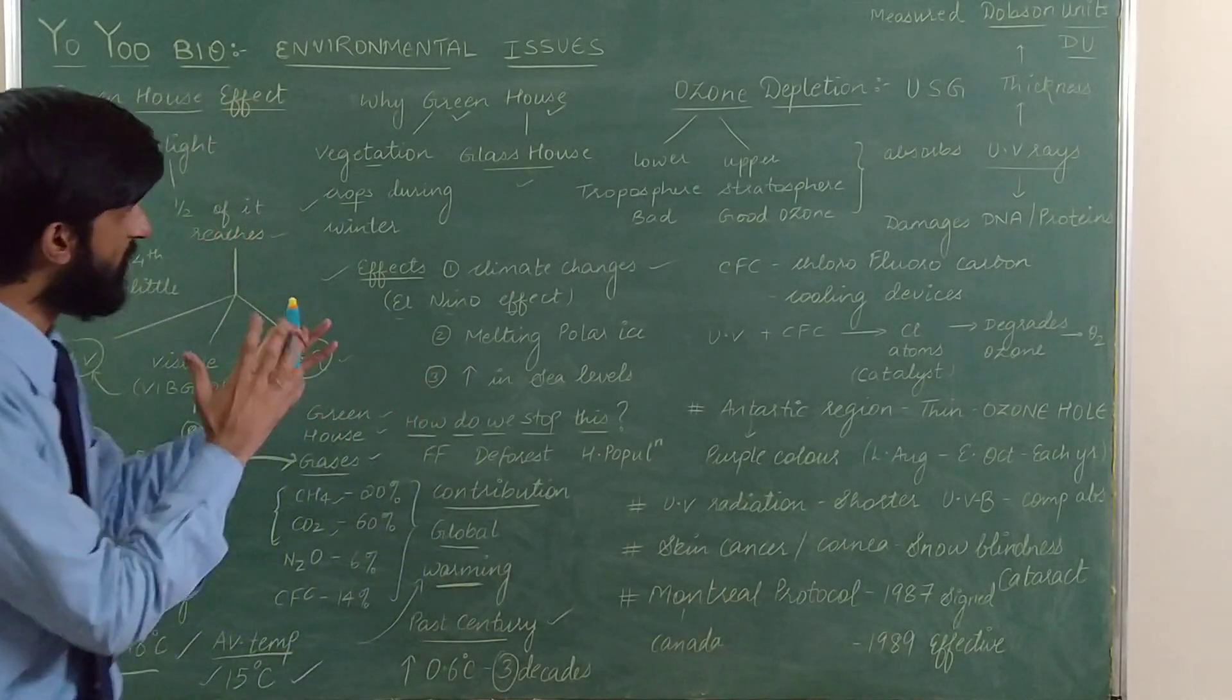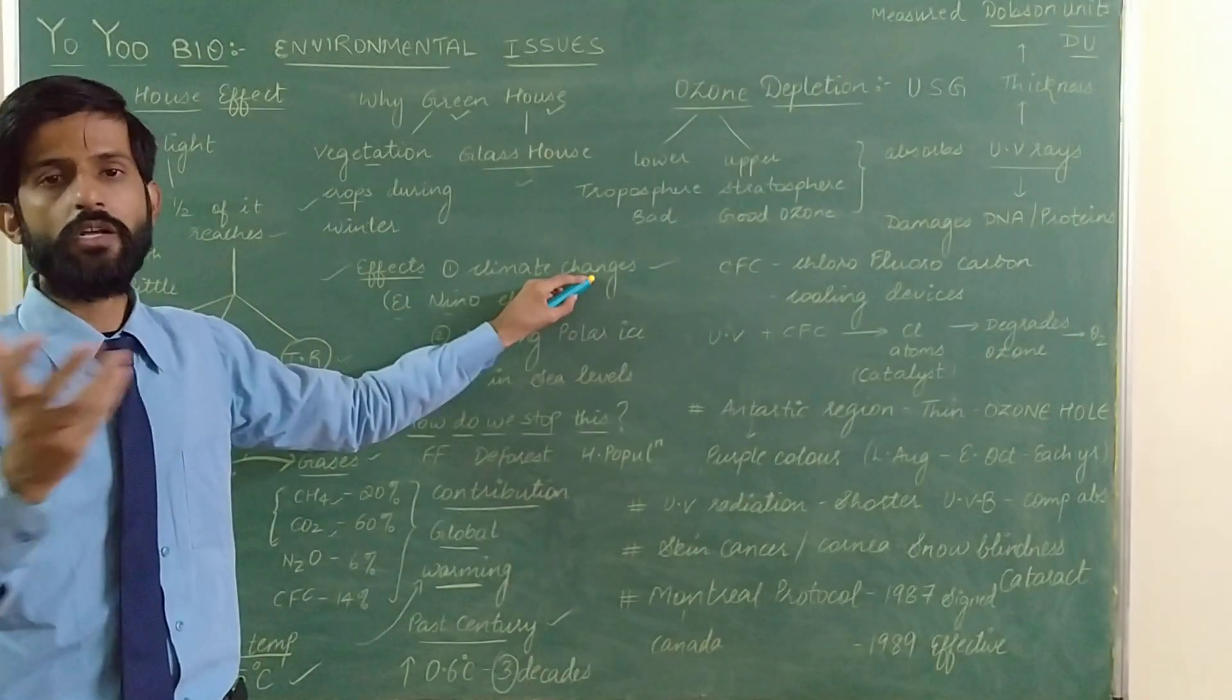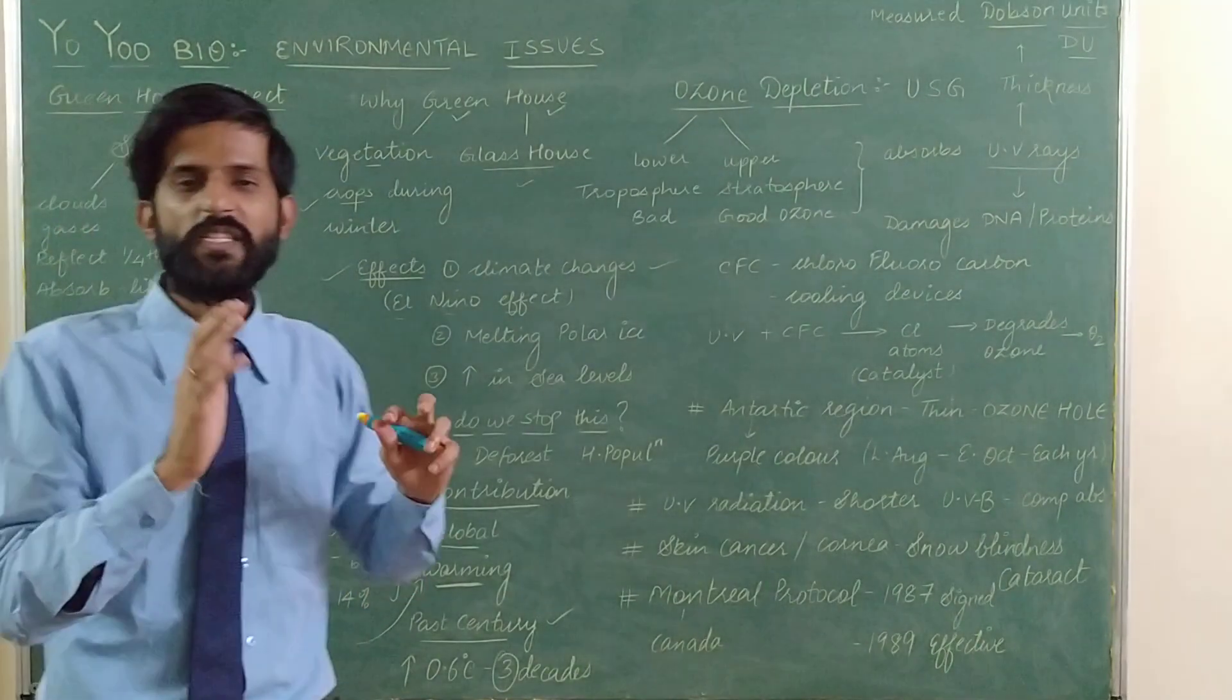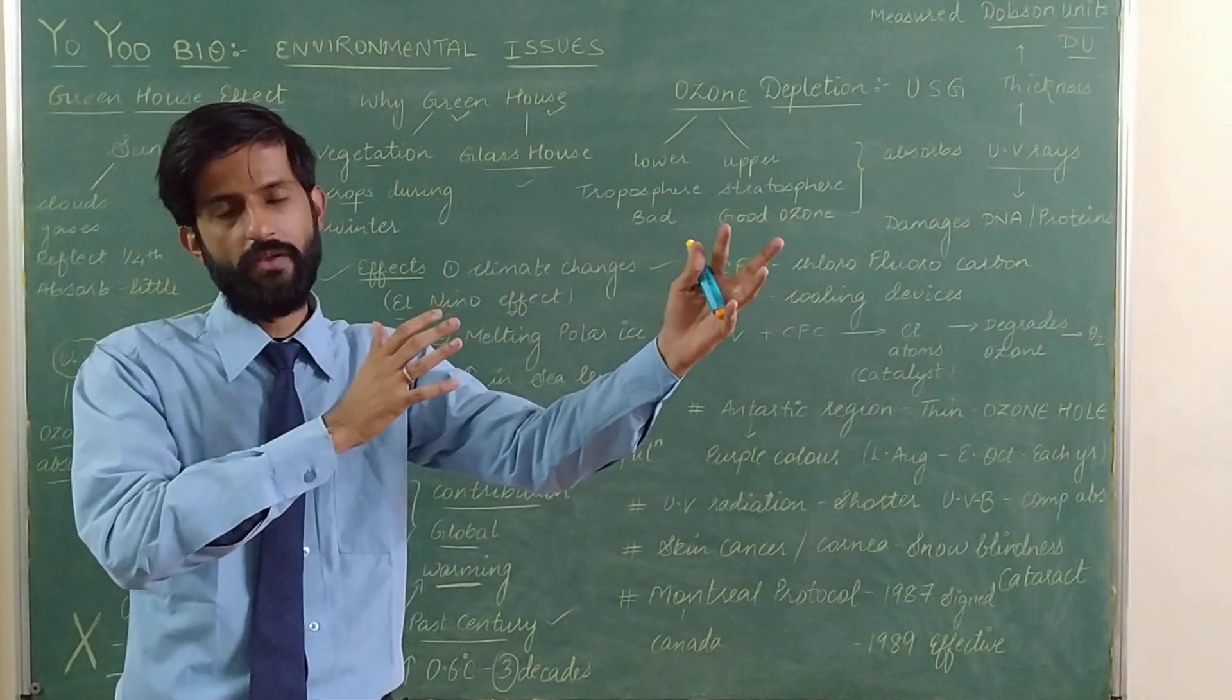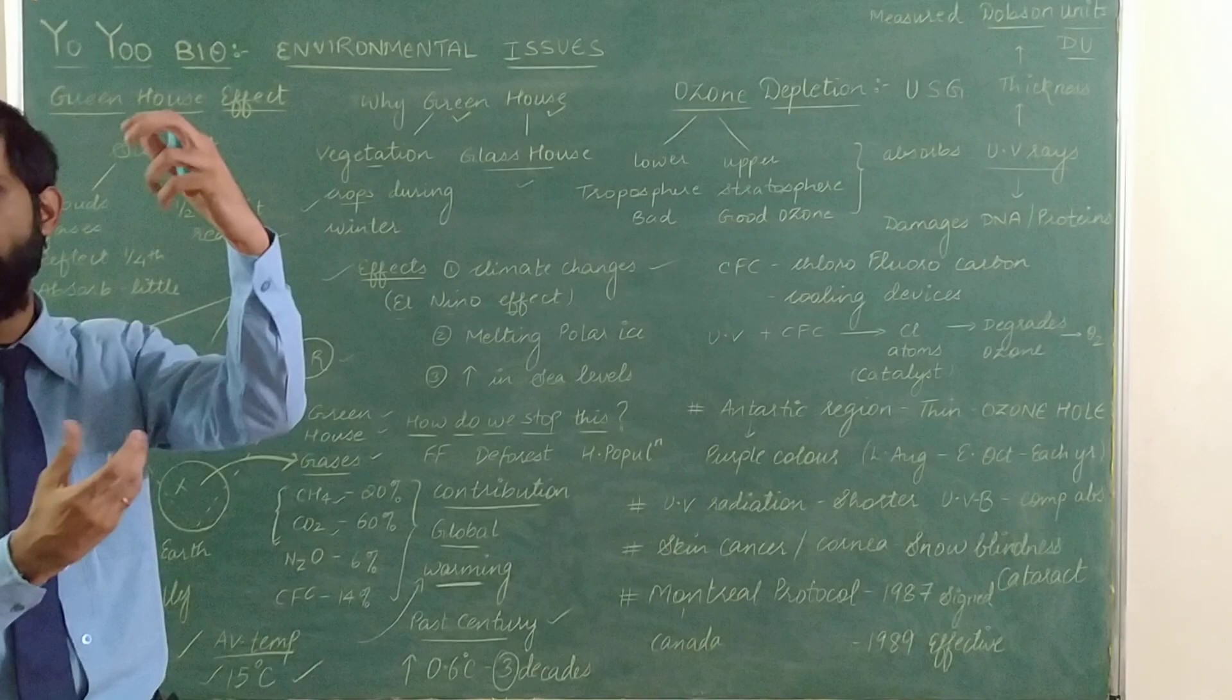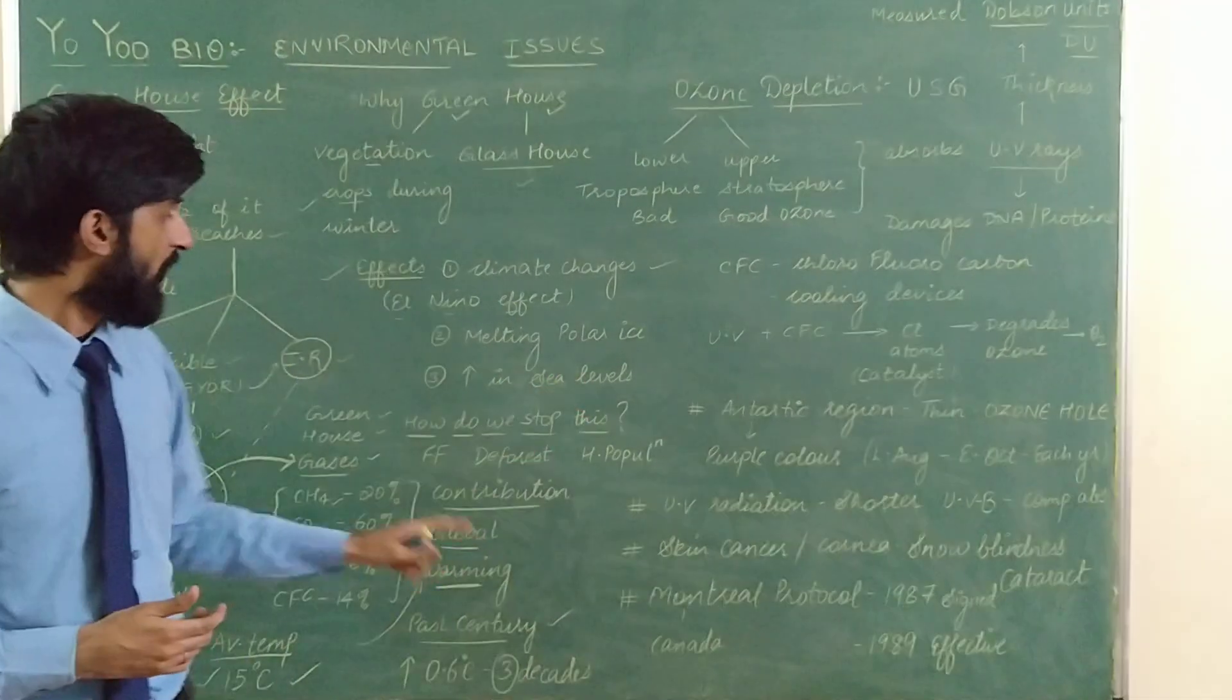If this greenhouse effect continues, what side effects can come to our planet Earth? Number one, we can have climate changes like the El Nino effect, which talks about changes in wind direction over Pacific areas. Melting of polar ice caps, floods will change, rainfall will change, and there is an increase in sea level.